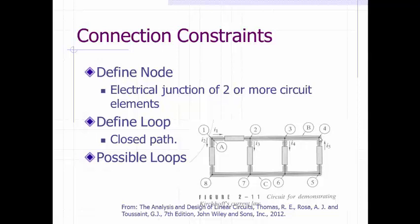But there's a rule: if nodes are connected by pure wire, then we consider that as one single node. So actually, nodes two, three, and four together are only one node.